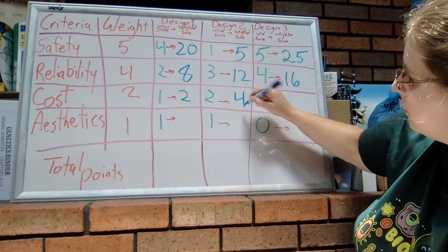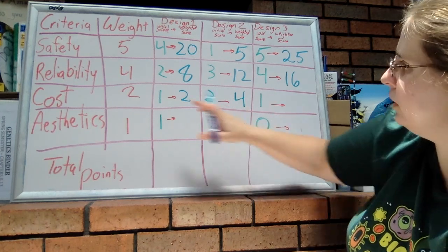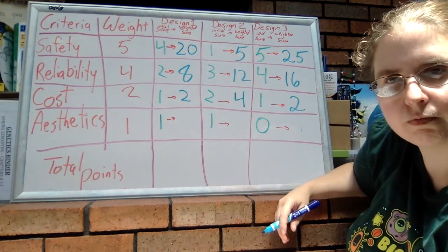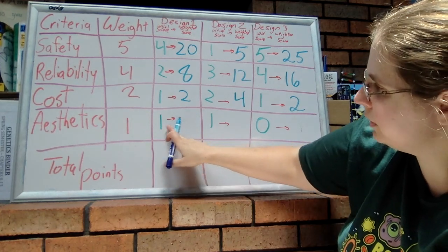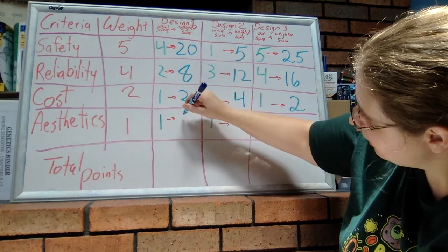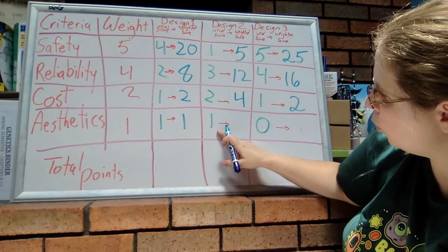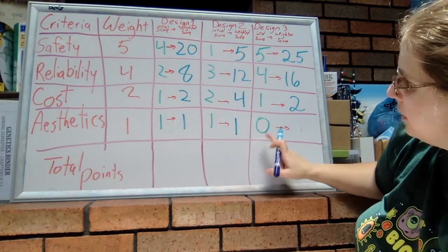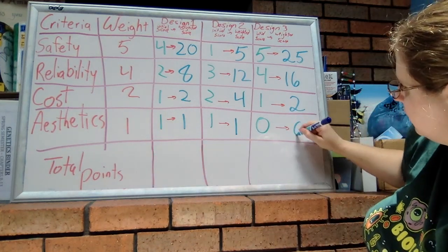All right, cost had a weight of two: one times two is two, two times two is four, one times two is two. All right, one times one for aesthetics is one, one times one is one, zero times one is zero.